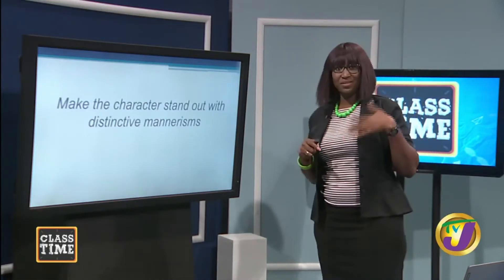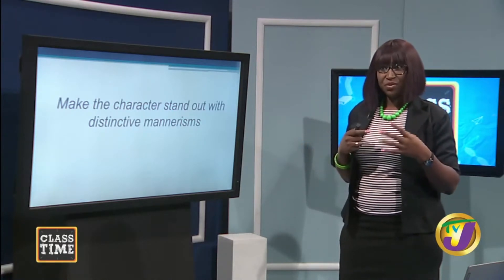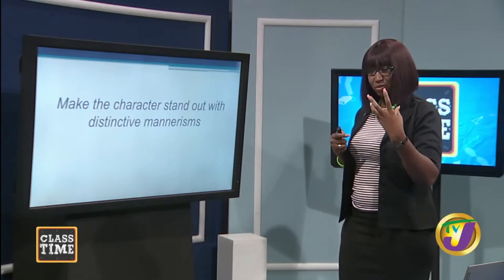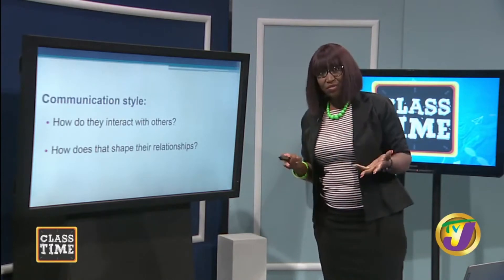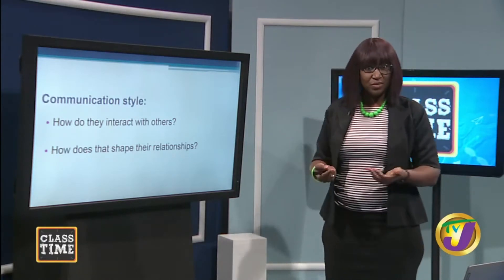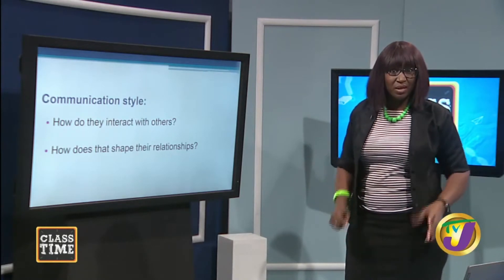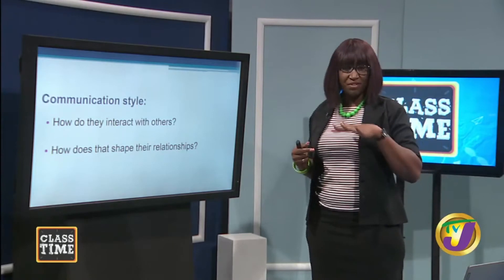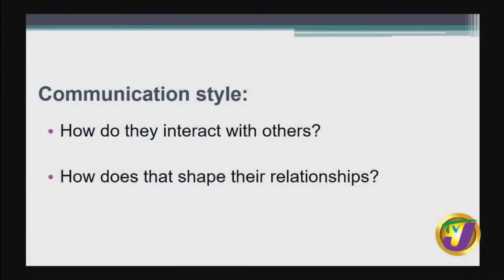Make the character stand out with distinctive mannerisms. Think about communication style — how do they interact with other people? Does this character relate well to those around them, telling everybody good morning and talking nicely? Are they cold and reserved? Their communication style will affect their relationships. John Brown at home may be locked in his room, not talking to anybody — that tells us something about how he relates to his parents, his siblings. When a visitor comes he just looks at them and walks away, telling us something about how he relates to people.